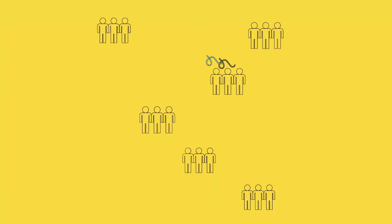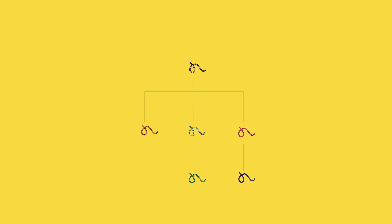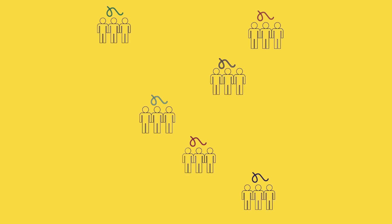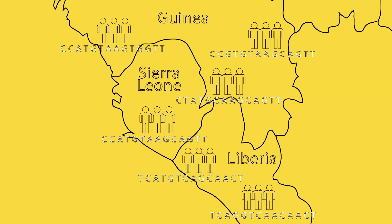As Ebola spreads to different groups of humans, different mutations accumulate in each group. We can use these differences to understand how Ebola is spreading. The more differences we find between two groups, the longer ago they split — think of it as retracing the Ebola family tree. This is exactly what researchers did early in the Ebola epidemic in West Africa. They took samples of the virus from the region, read off the DNA from each sample, and compared the differences. The results helped the medical community to better understand how Ebola was spreading.